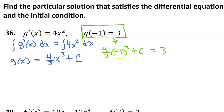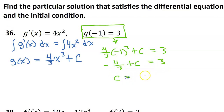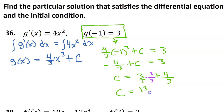Negative 1 to the third power is still going to be negative 1, so we will end up with negative 4/3 plus c is equal to 3. So now if I add 4/3 to both sides, I get c is equal to 3 plus 4 over 3. We need like denominators, so I'm going to multiply by 3 over 3, giving us 9 over 3. So 9 over 3 plus 4 over 3 is going to be 13 over 3.